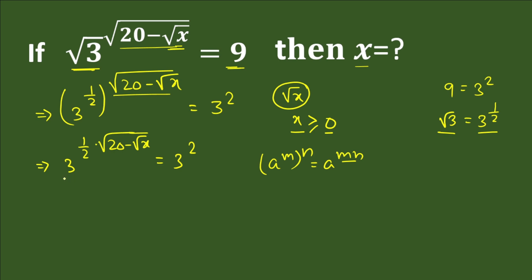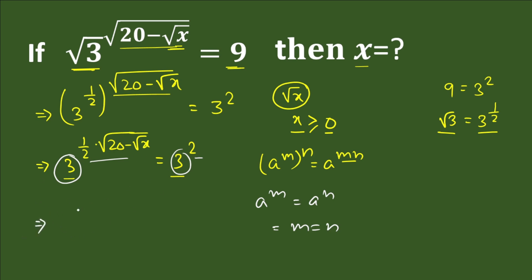Now on both sides we have the same base. This is in the form a^m = a^n, and we have made the base the same — 3 and 3. Since the powers are different, we can equate them. According to the law of indices we can write the powers equal: (1/2) multiplied by (square root of 20 minus square root x) equals 2.